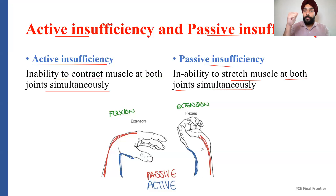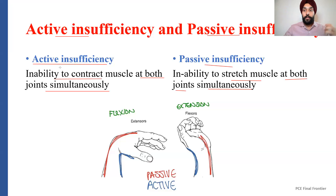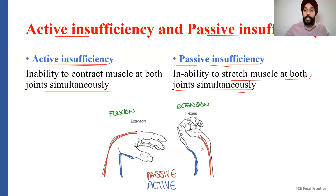If I try to flex my fingers and then extend my wrist, I will have more range of motion than if I extend my fingers. So again, active insufficiency means a muscle has the insufficiency to contract at two joints simultaneously, and passive insufficiency means a muscle is insufficient to stretch simultaneously at both joints. The key word in this particular concept is contracting or stretching at two joints at the same time.